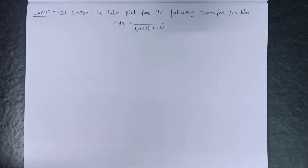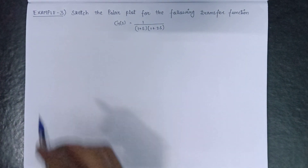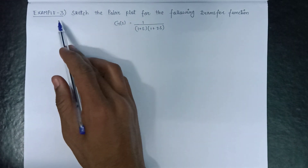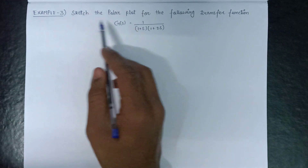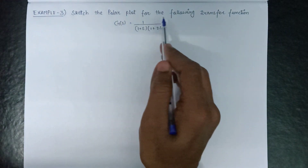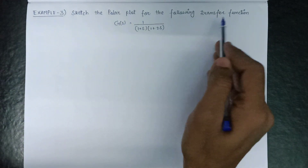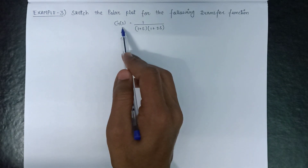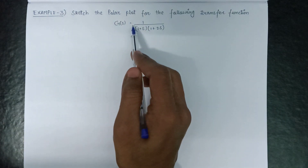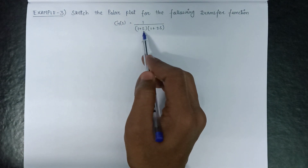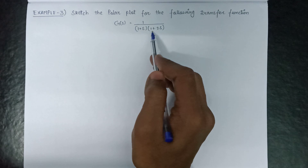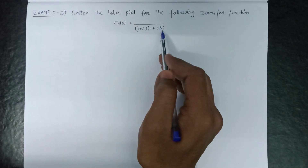Welcome all. In this lecture we are going to solve one more example, that is example number 3: sketch the polar plot for the following transfer function, which is given as G(s) = 1 / [(1 + s)(1 + 2s)].